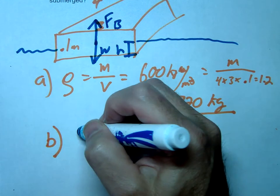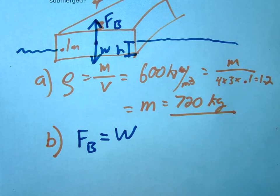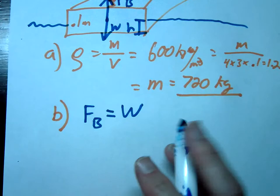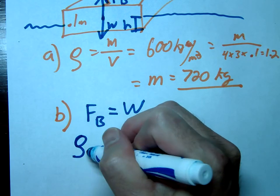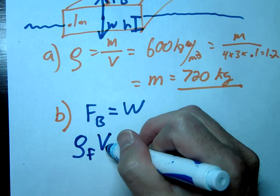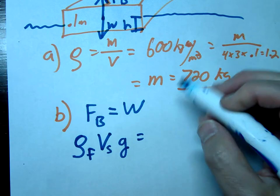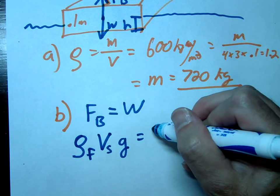So since it is floating we're gonna say that the buoyancy force is equal to our weight. So remember the equation for buoyancy force, this is going to be the density of the fluid times the volume submerged times little g, and then this should be equal to the weight here, so this would be the mass of the raft times little g.